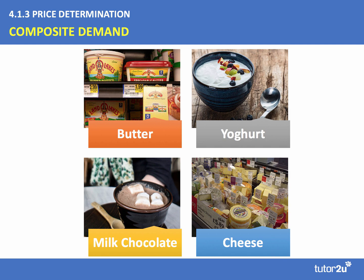Another example is land. Farmland can be developed in many different ways — to grow different crops, or move away from crops towards arable farming, towards livestock farming, or towards golf courses. Urban land has many different uses, so urban land has a composite demand. Oil is also used in many different industries, such as plastics. So that's composite demand.